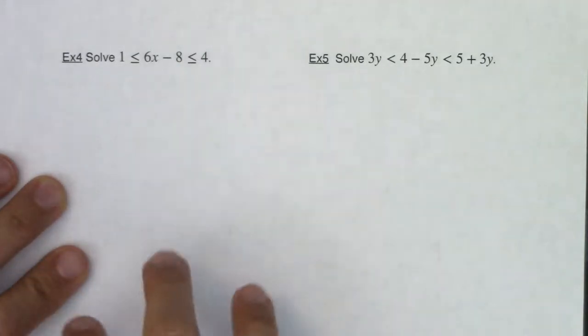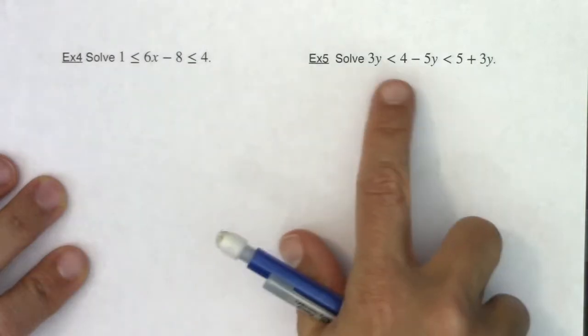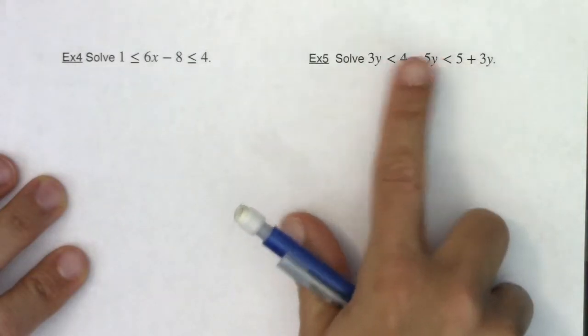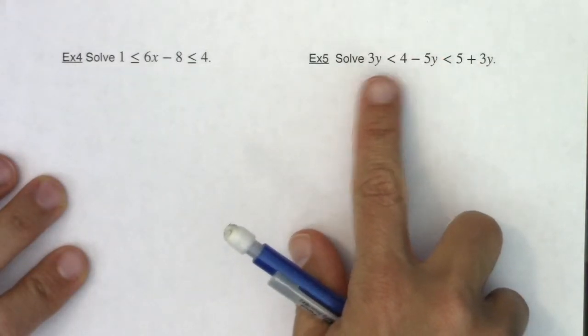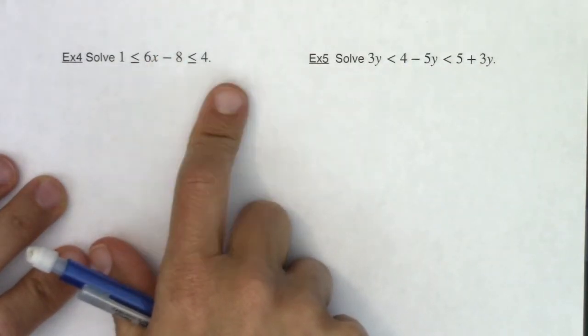I'm going to do example four. It's the easier version, because the variable is just in the middle. You can see this is a little bit more complicated because I have variables in all three of the parts. So when you're working with a three-part inequality, same rules apply.